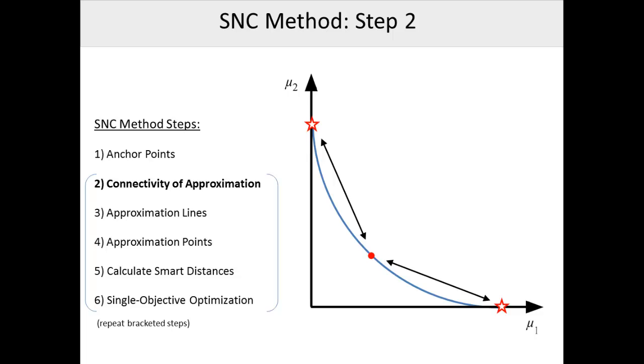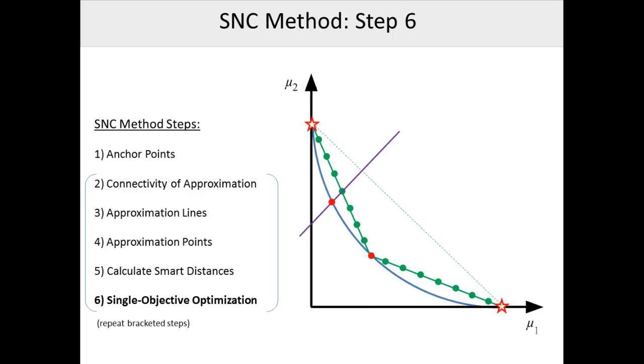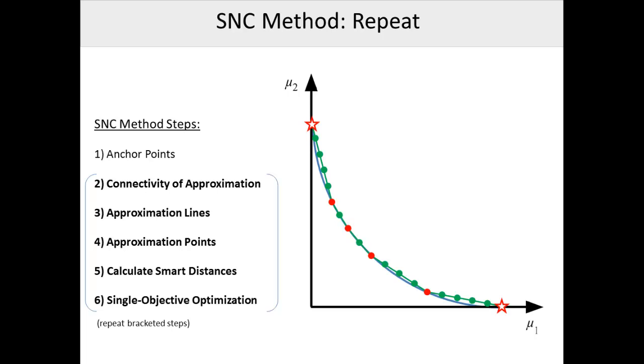Steps 2 through 6 then repeat. New connectivity is found, new approximation lines and points are created, smart distances are calculated once more, and another single objective optimization is performed. When there is no more room on the Pareto frontier for new smart Pareto points, the algorithm ends, and the smart Pareto set is presented to the designer.